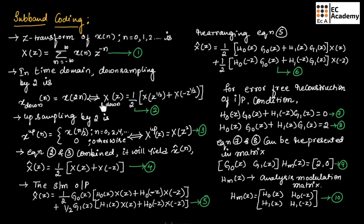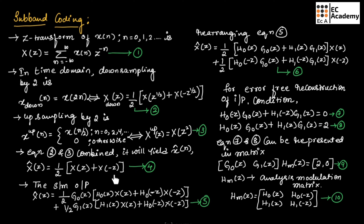The z-transform of x_down(n) is: X_down(z) = (1/2)[X(z^(1/2)) + X(−z^(1/2))]. Upsampling by 2 gives x_up(n) = x(n/2) for n = 0, 2, 4, ... and 0 otherwise, so X_up(z) = X(z²). Combining these two equations, we can write X̂(z) = (1/2)[X(z) + X(−z)].